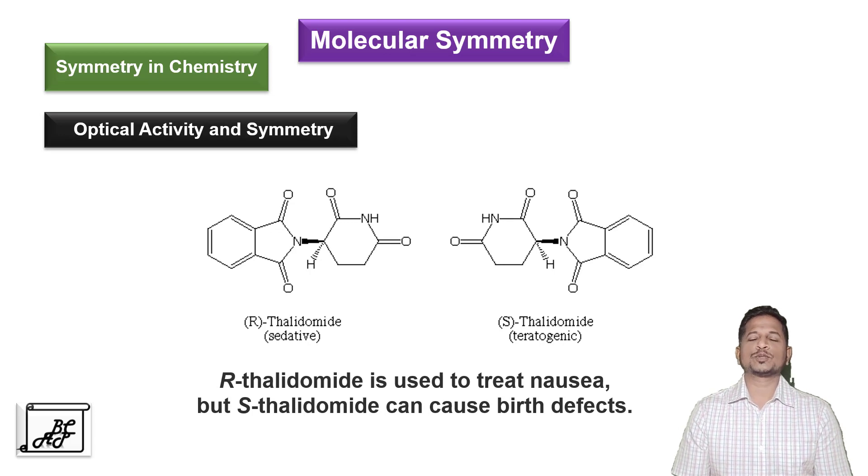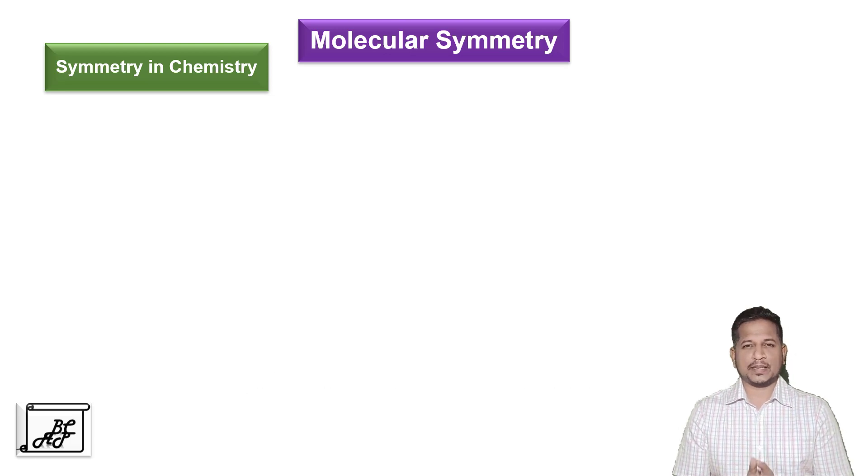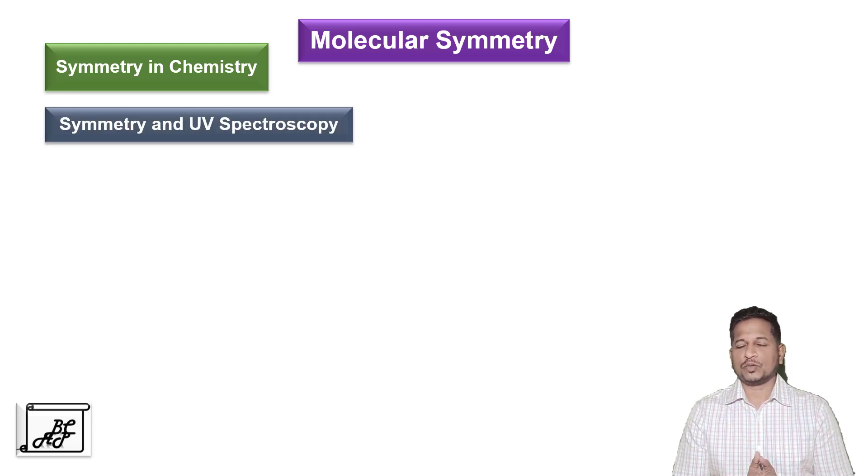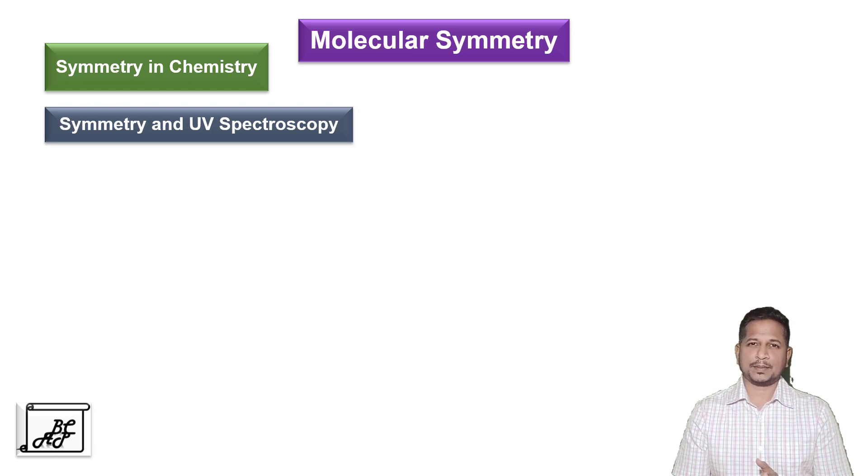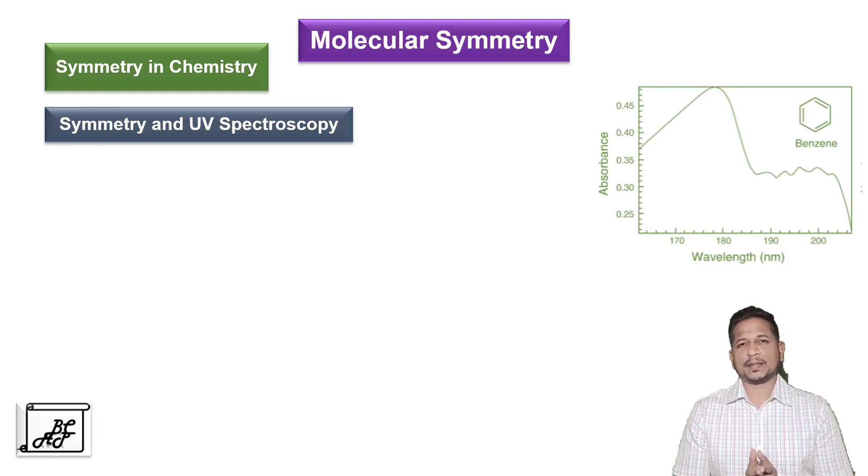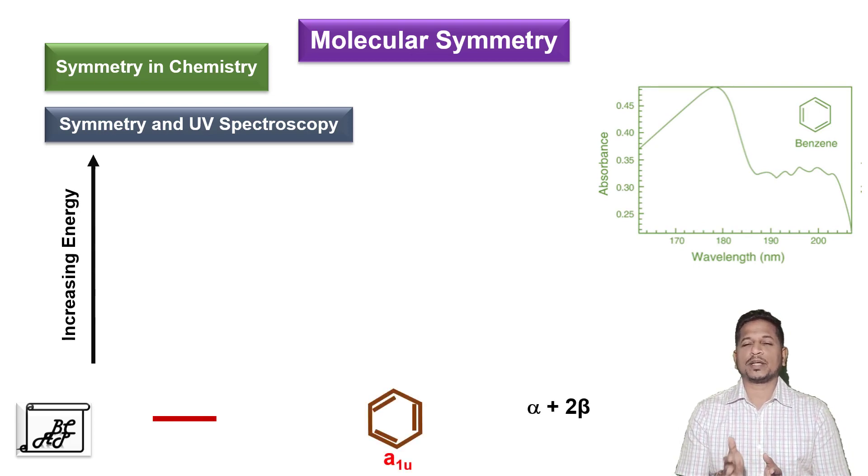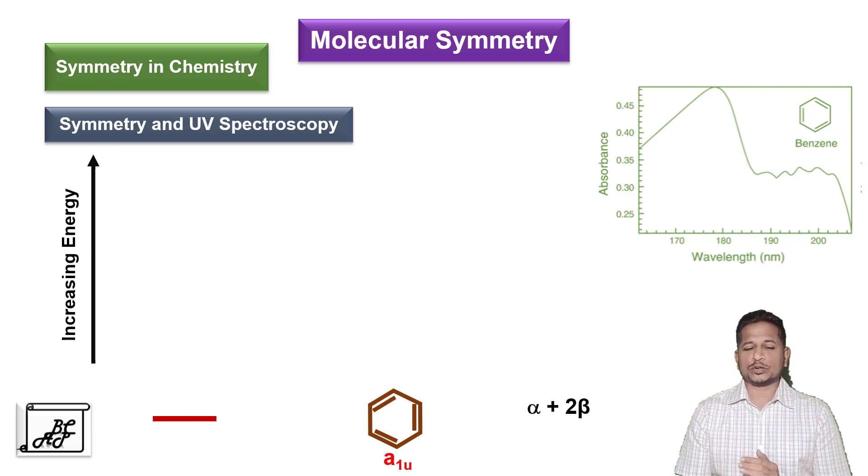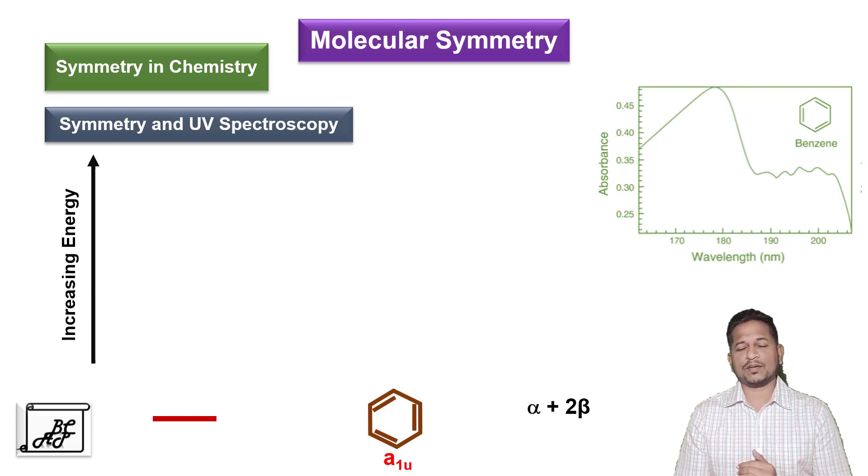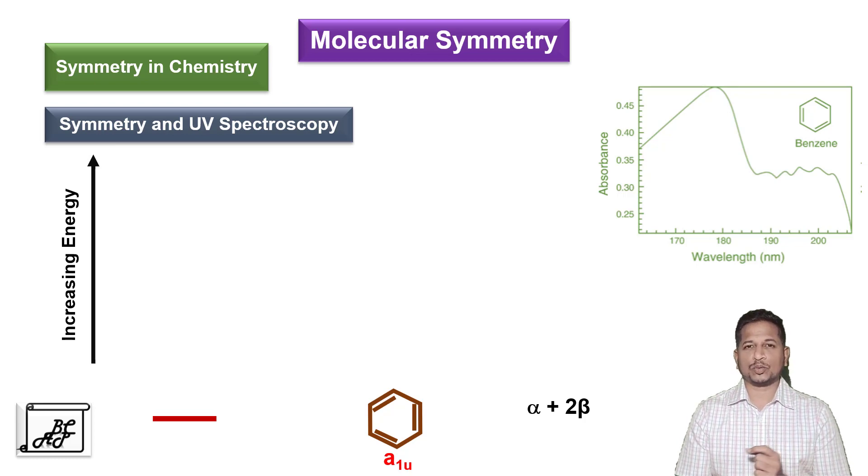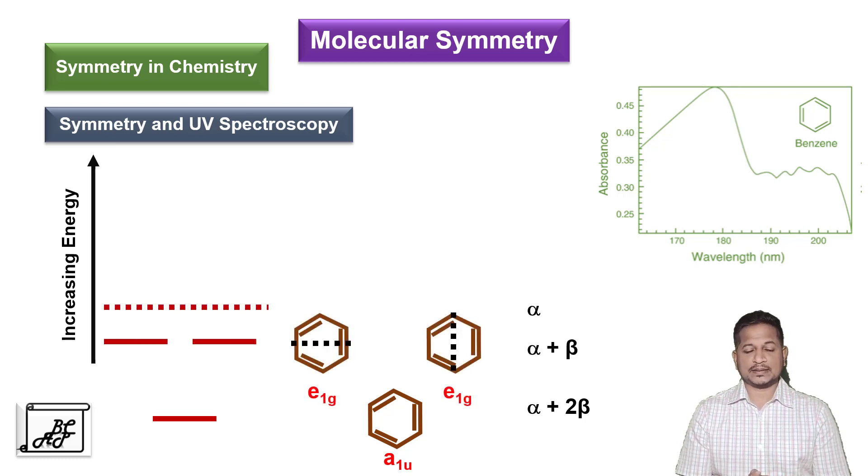Molecular symmetry also helps to understand spectroscopic techniques. The first is UV spectroscopy. For example, if we record the UV spectra of benzene, this spectrum can be understood by drawing a molecular orbital diagram of benzene. The first is ground state termed as A1U which consists of zero nodes. The first excited state consists of one node termed as E1G. The second excited state consists of two nodes termed as E2U.